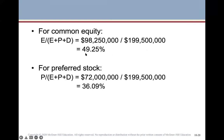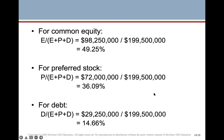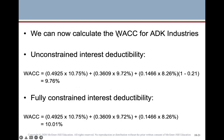The weights are: common equity = 49.25%, preferred stock = 36.09%, and debt = 14.66% of total capital.